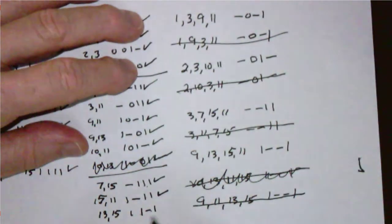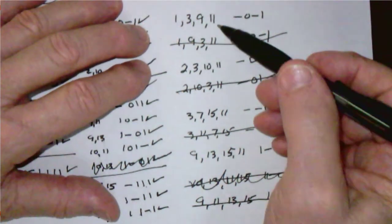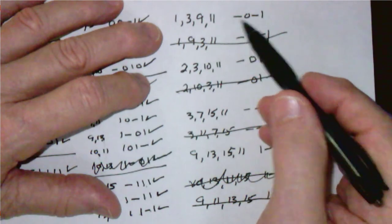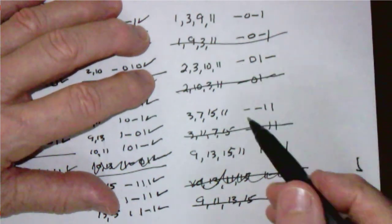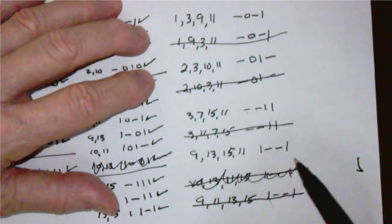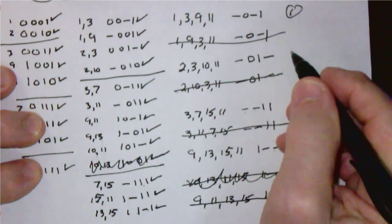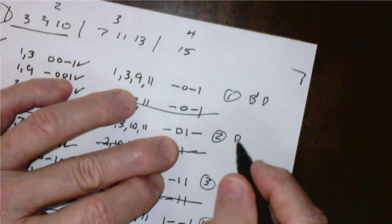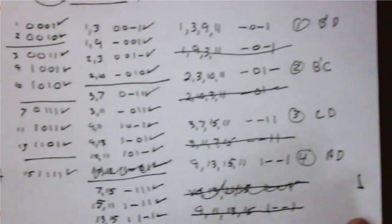So we're left with four two-variable prime implicant terms: -0-1 corresponds to B'D; -01- corresponds to B'C; --11 corresponds to CD; and 1--1 corresponds to AD. Now we place those on our prime implicant selection chart.